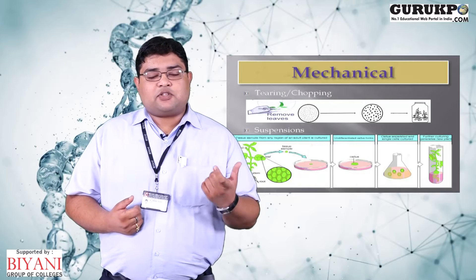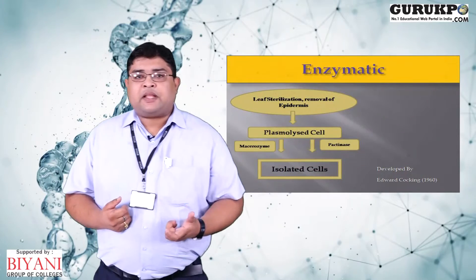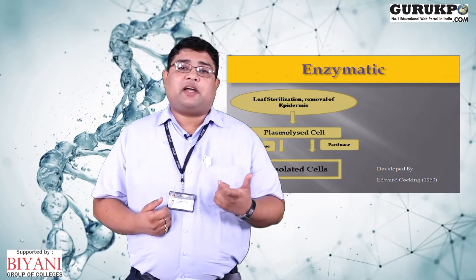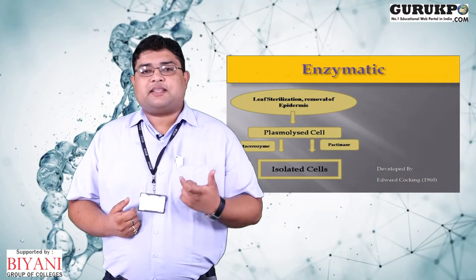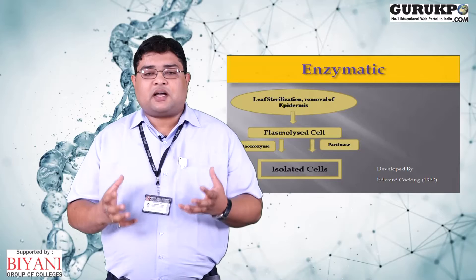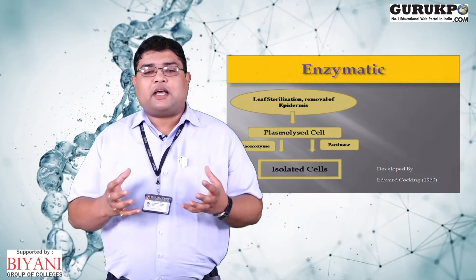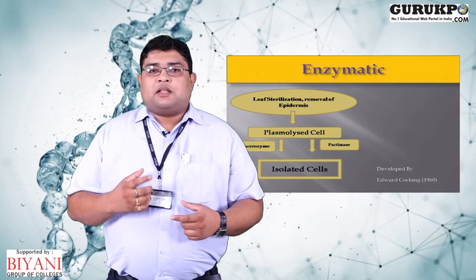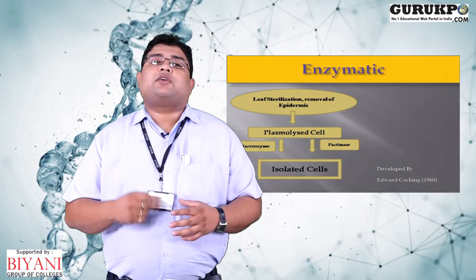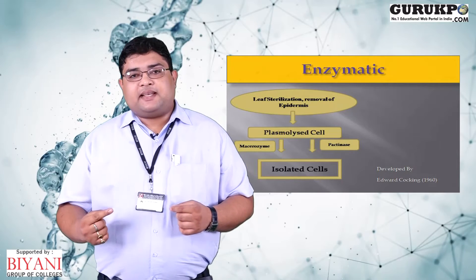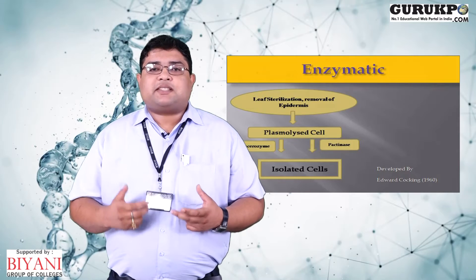The enzymatic method was developed in 1960 by senior scientist Edward C. Cocking. The principle behind the enzymatic method is that the cells of the plant tissue are highly compact and are associated with the cell wall made up of pectin. If this pectin can be dissolved with the help of some enzymes, the cells can be isolated. There are two specific enzymes: first is pectinase, and second is macerozymes.